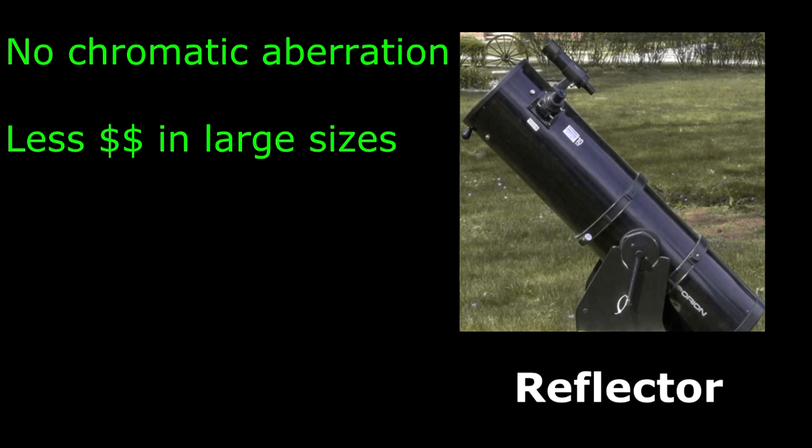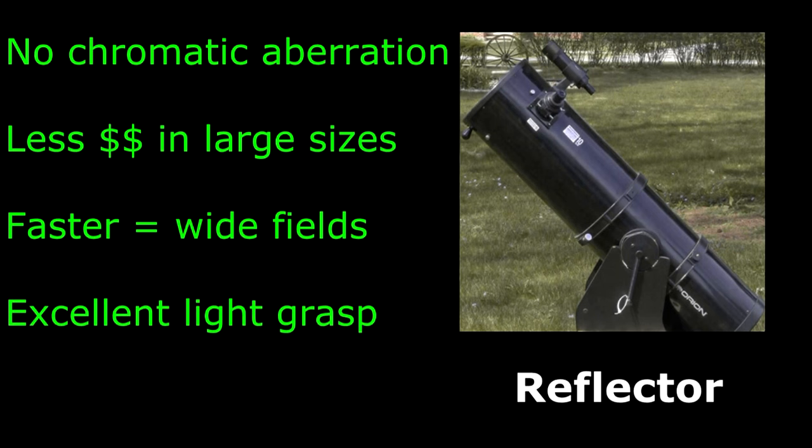Reflectors have their own set of advantages. No chromatic aberration, easier and less expensive to make in larger apertures. Faster focal ratio systems provide wide fields of view. Light grasp in larger models is excellent and the cost per inch of aperture is best.